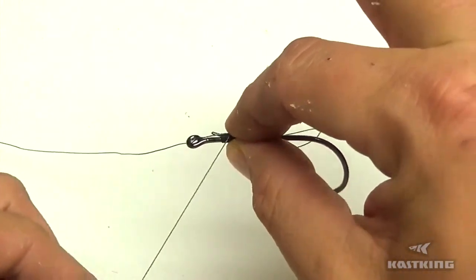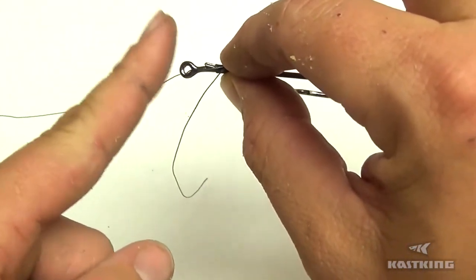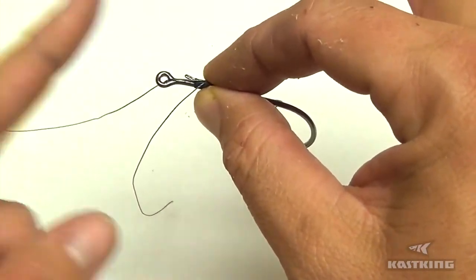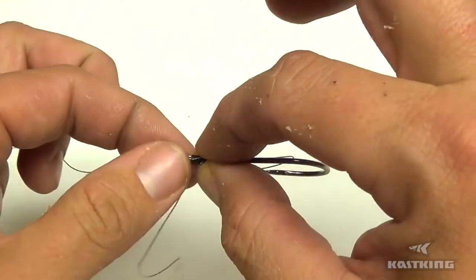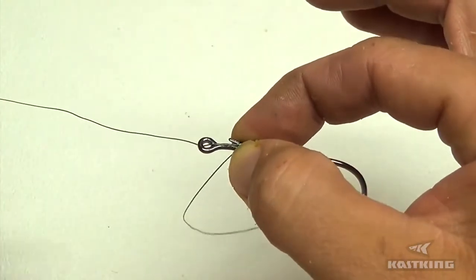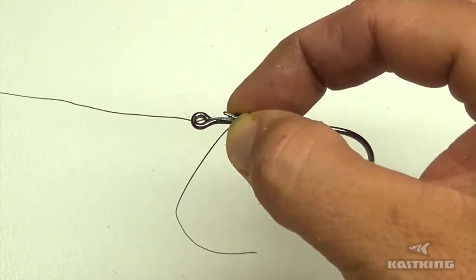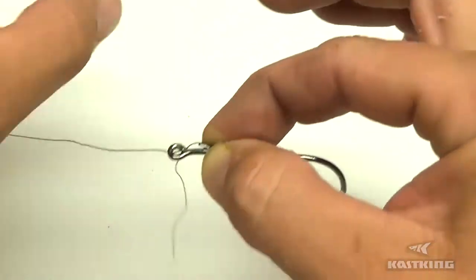Now what you're going to do is you're going to take your tag end and if your hook has a bait keeper like this one does, everything is going to be above the bait keeper that we're doing here. So take your tag end and what you're going to do is you're going to wrap the tag end around the shank of your hook. Now there's really no set number that I deal with, it's always different, but maybe 6 to 8 times. Start wrapping.